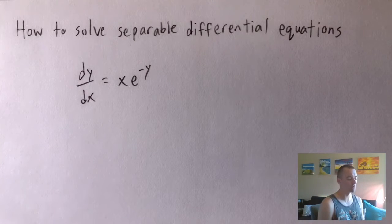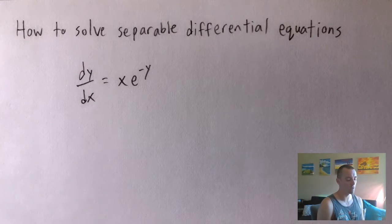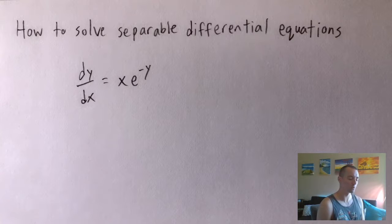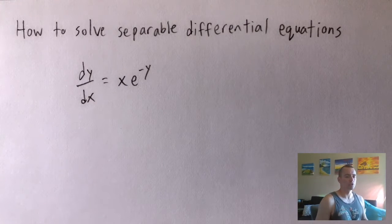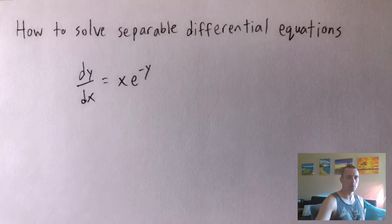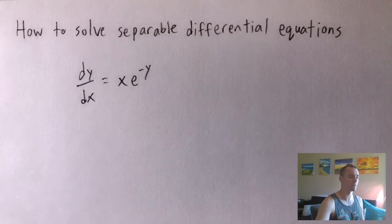Hey guys, Jake here coming at you with another math problem today. I'm going to be showing you how to solve separable differential equations, and I'm going to do that with this example: dy/dx equals x times e to the negative y. I wanted to show you a differential equation separation of variables example problem with solution because this is actually one of the formulas on my calculus 2 study guide.